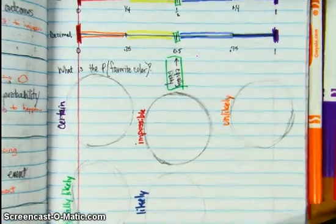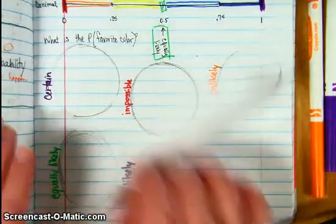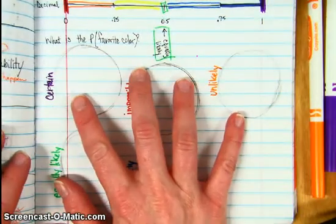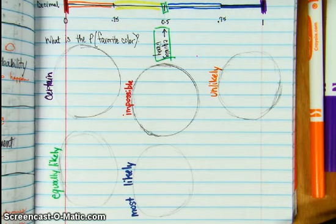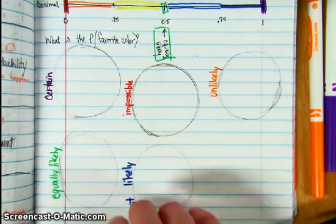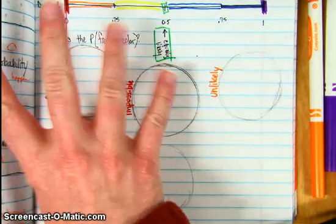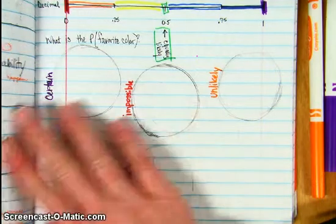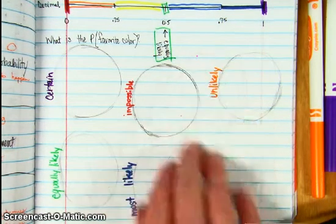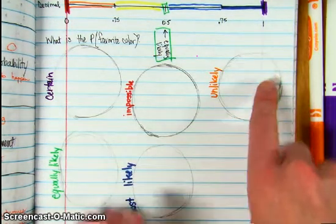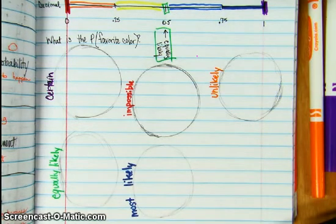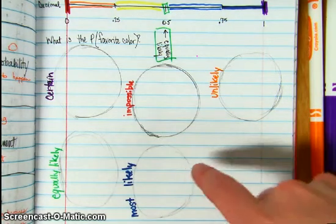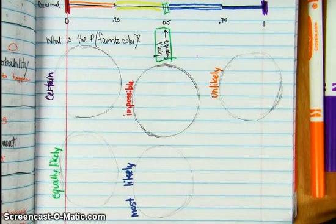So what I want you to do is to color these circles to create the probability of your favorite color. So that means for the certain one, it's going to be entirely your favorite color. And then on impossible, your favorite color is not going to be there at all. And then on unlikely, and equally likely, and most likely, I want you to create the probabilities of getting your favorite color on those circles.